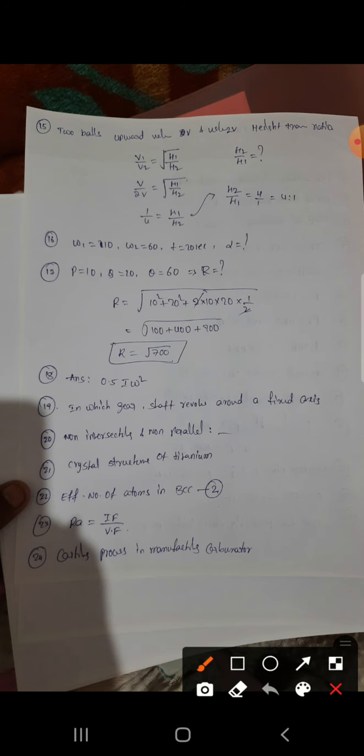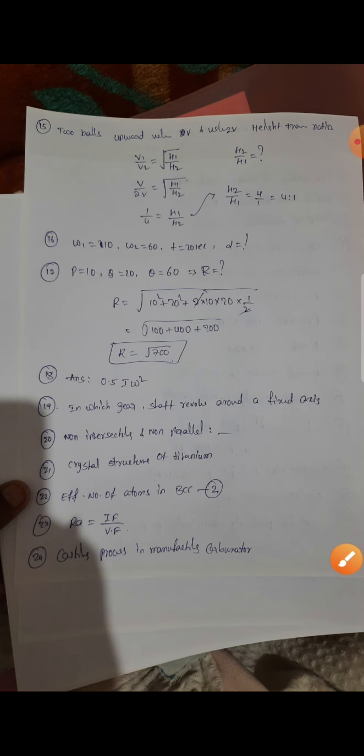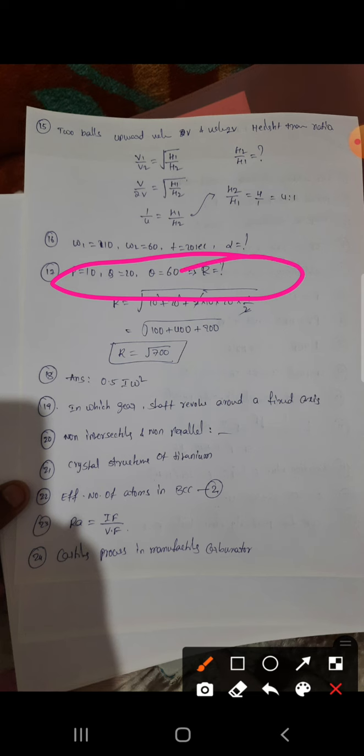There is a question related to W1, W2, T, and what is alpha they asked. I think it's 4. And P, Q and this one they asking, resultant they're asking. This is root under root of 700 and this one 0.5 I omega square.